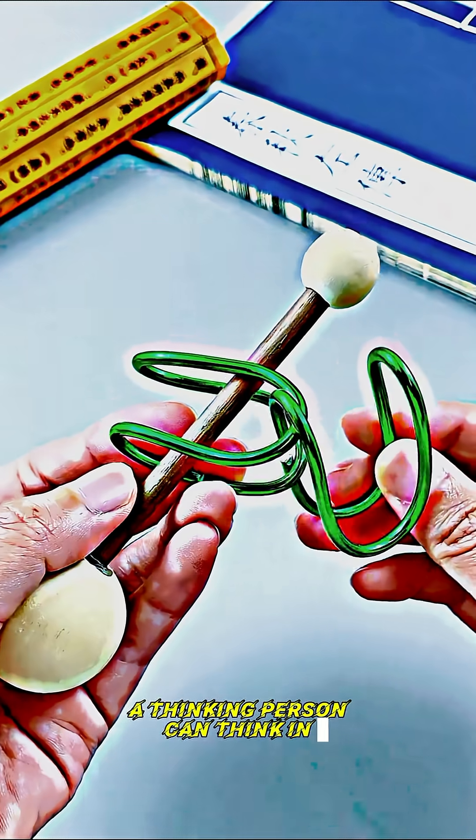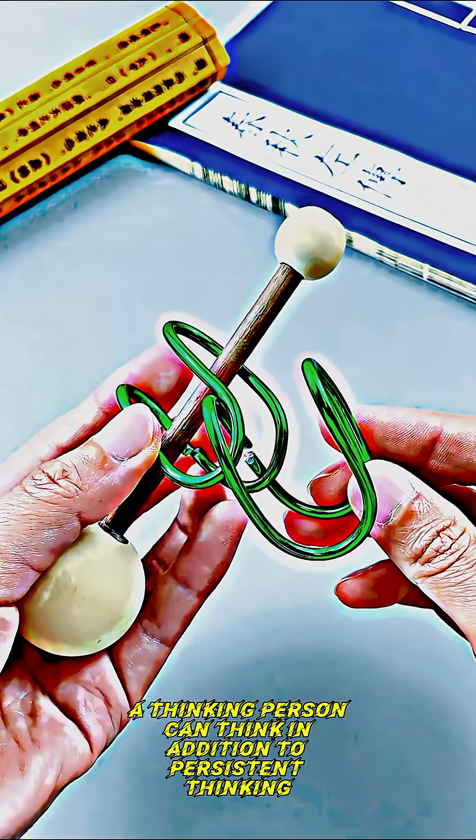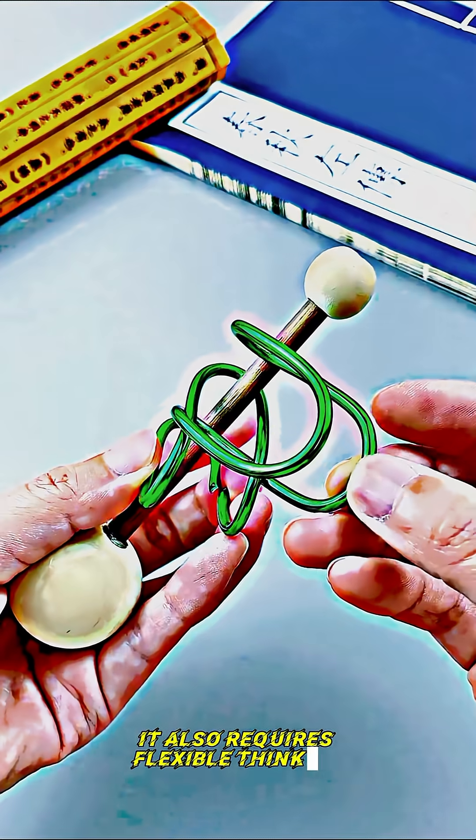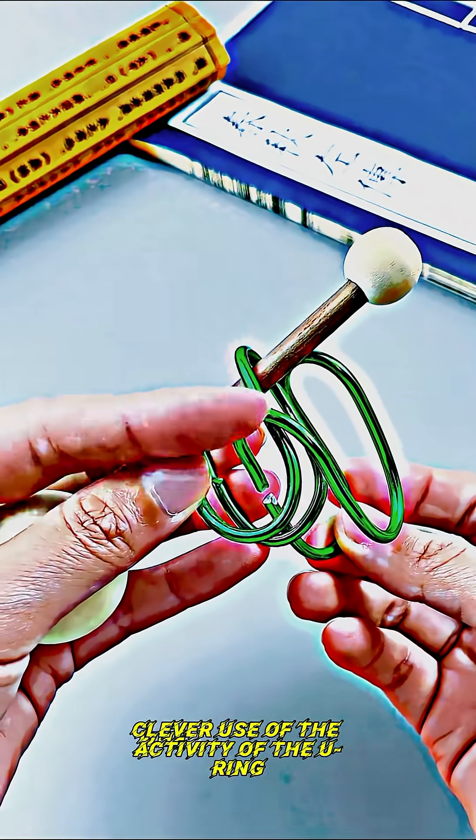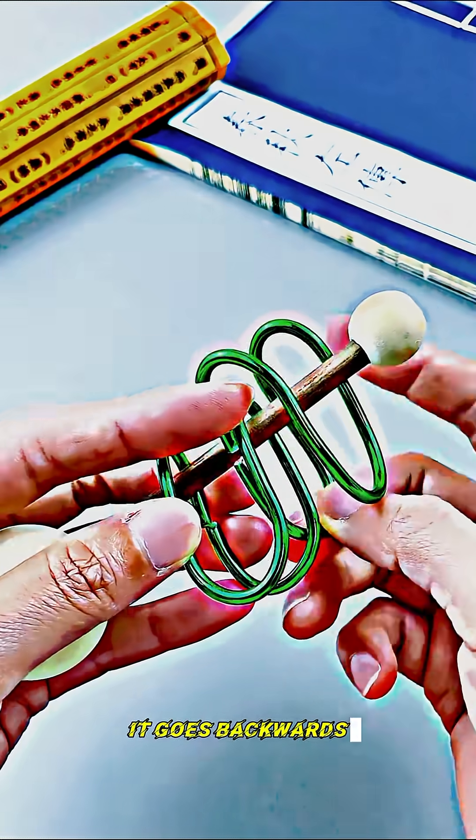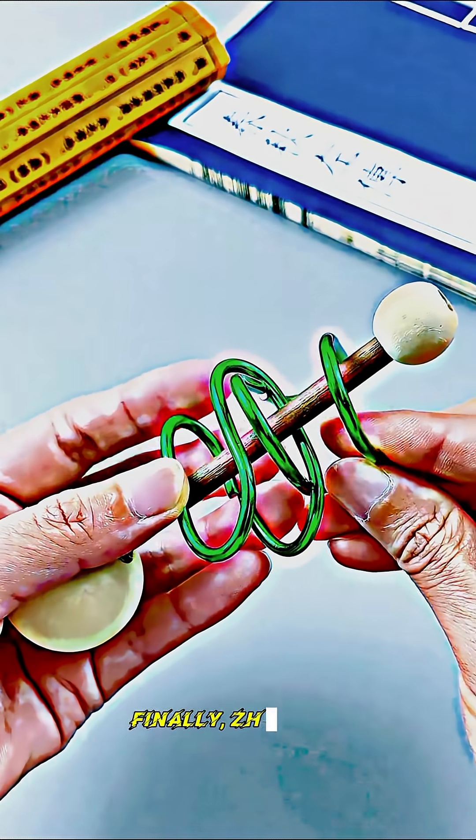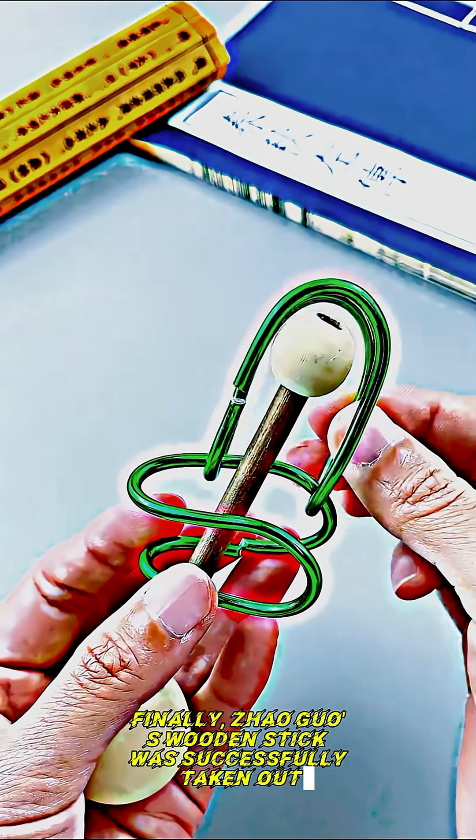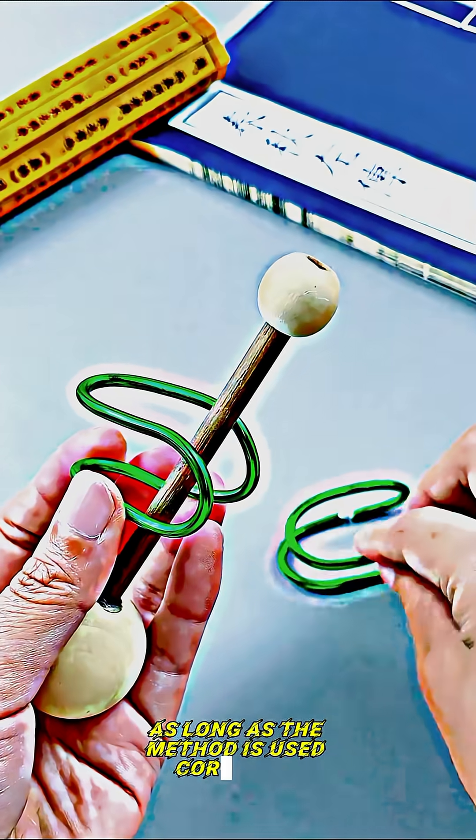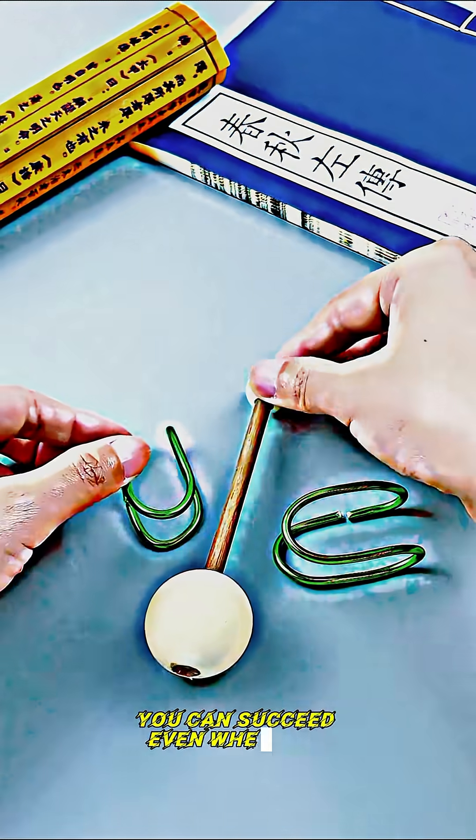A thinking person requires not only persistent thinking but also flexible thinking. Clever use of the activity of the U-ring allows it to go backwards through the U-ring when presented like this. Finally, the wooden stick was successfully taken out. As long as the method is used correctly, you can succeed even when you see the impossible.